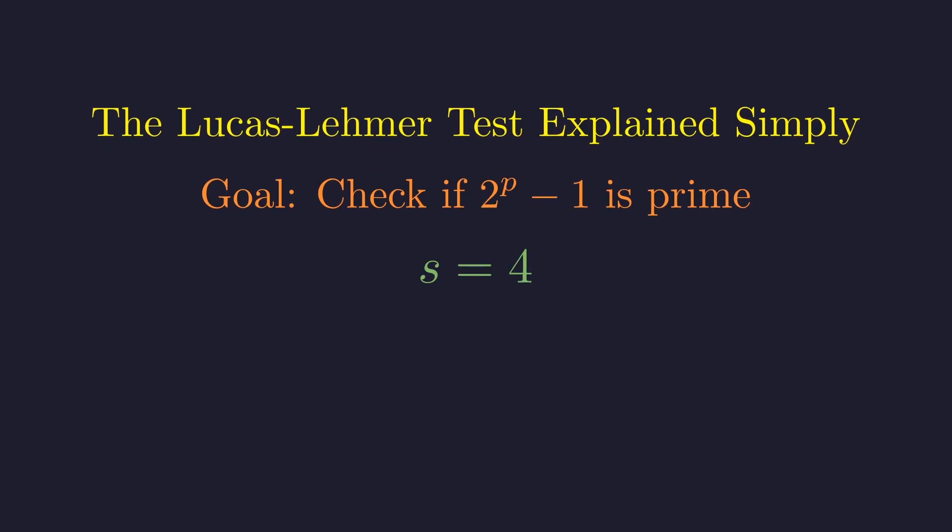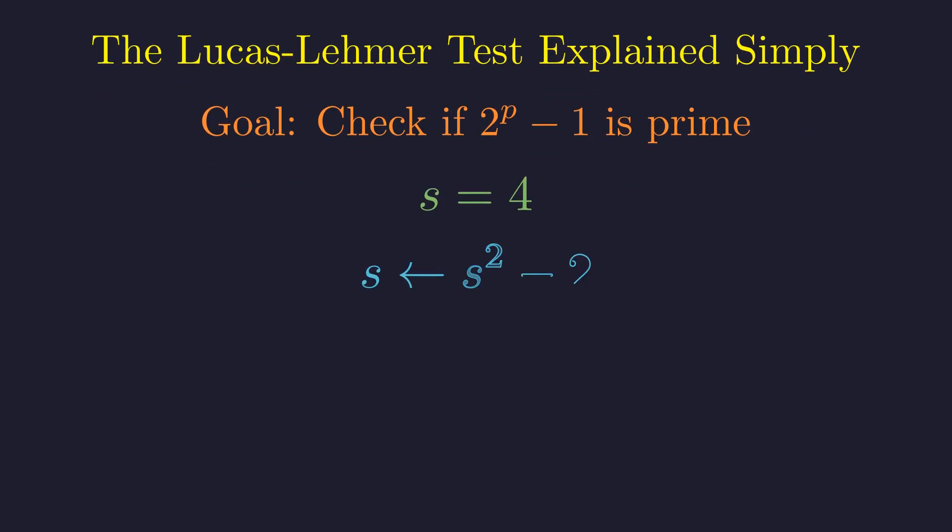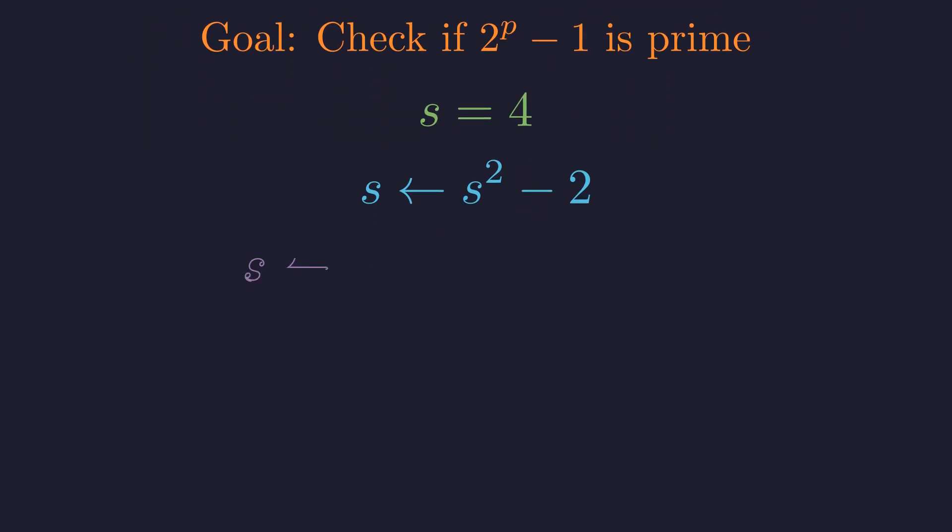Start with the number s equals 4. Then, repeatedly apply the rule: s becomes s squared minus 2. After each update, compute s becomes s squared minus 2, reduced modulo m of p. This keeps the numbers manageable.